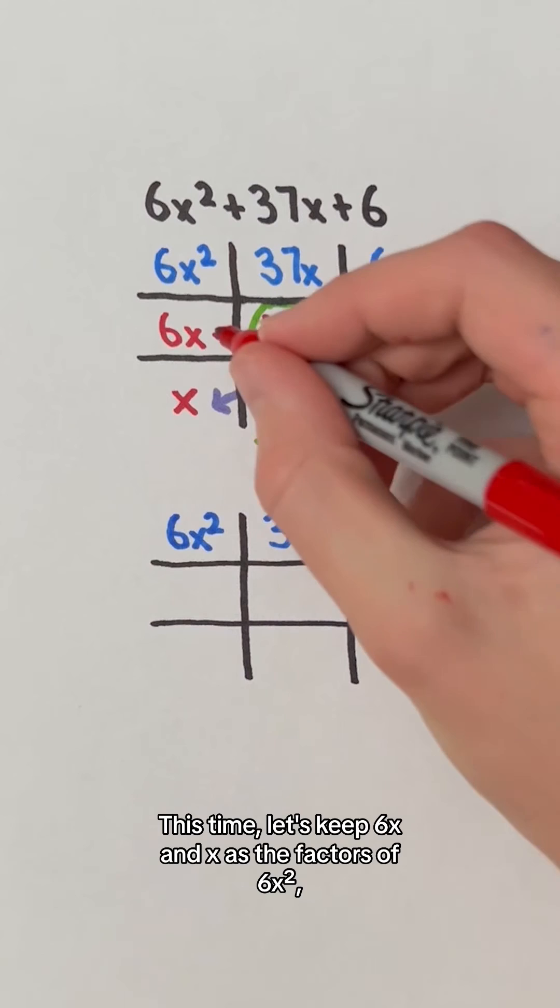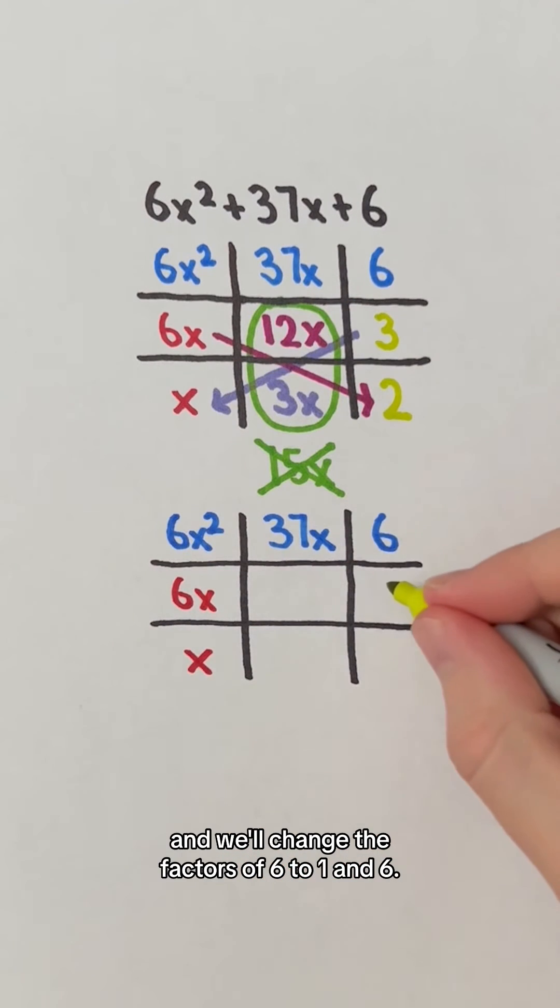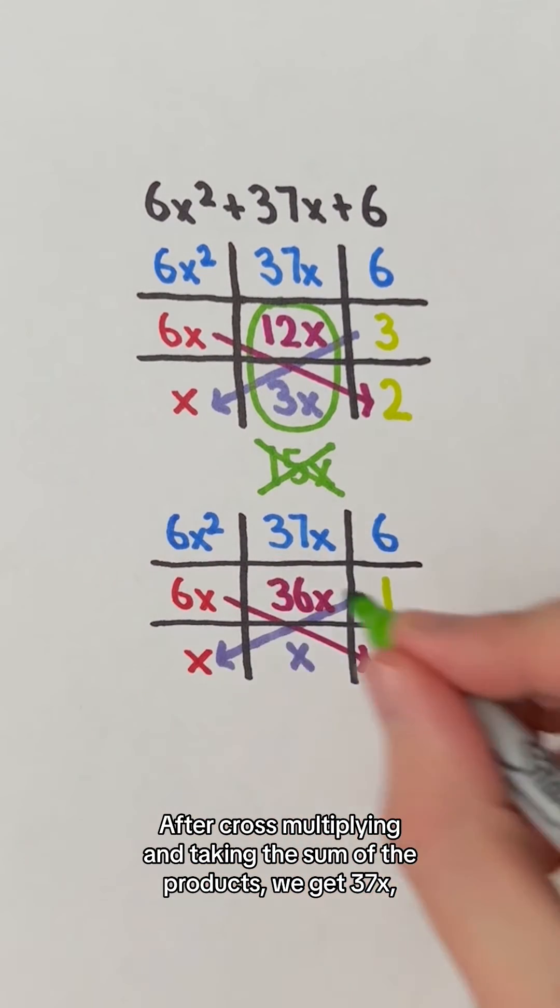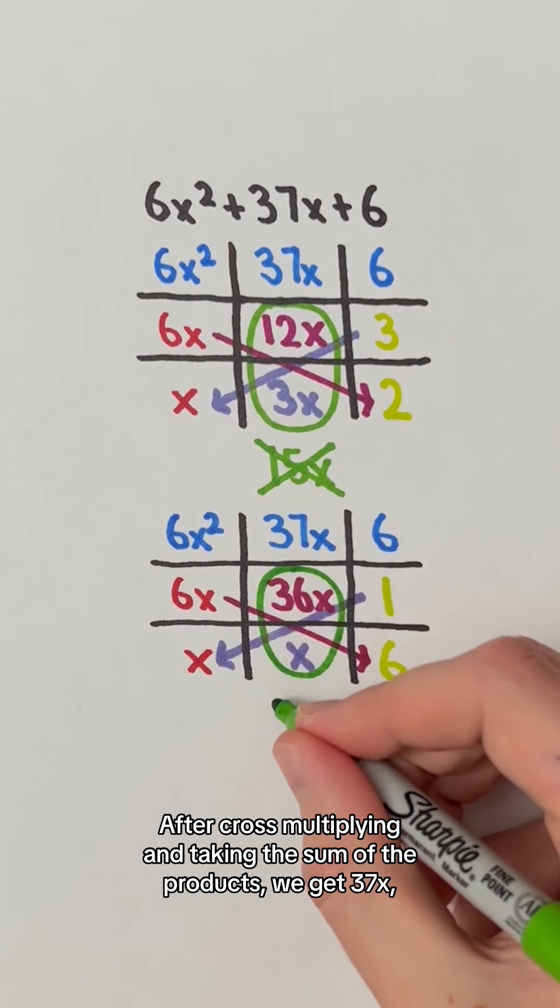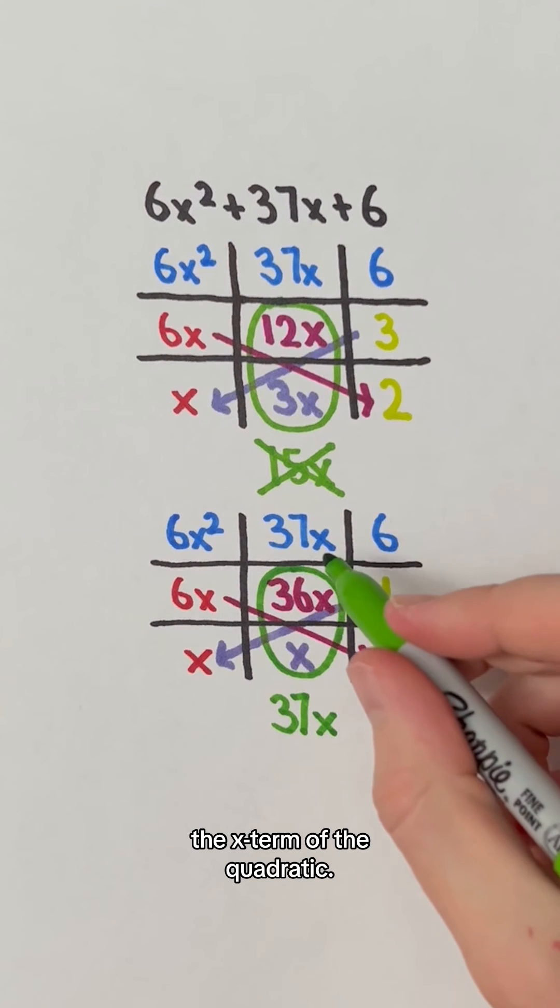This time, let's keep 6x and x as the factors of 6x squared, and we'll change the factors of 6 to 1 and 6. After cross-multiplying and taking the sum of the products, we get 37x, the x term of the quadratic.